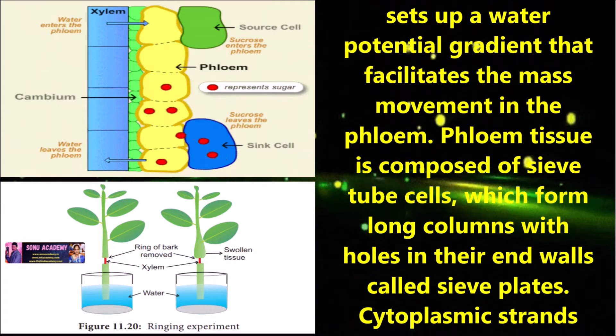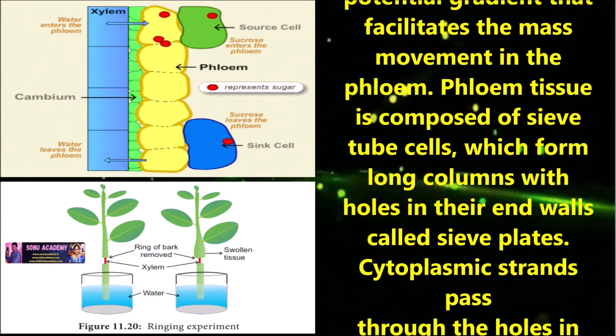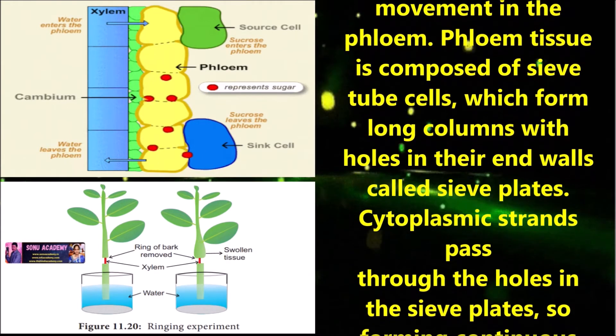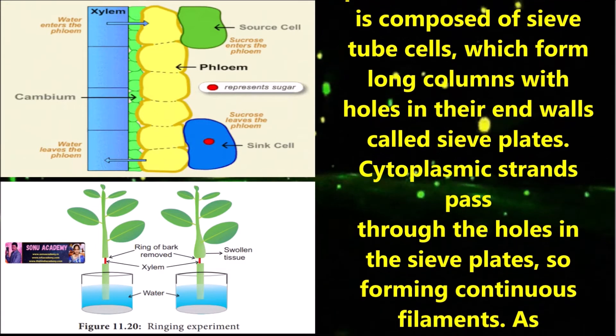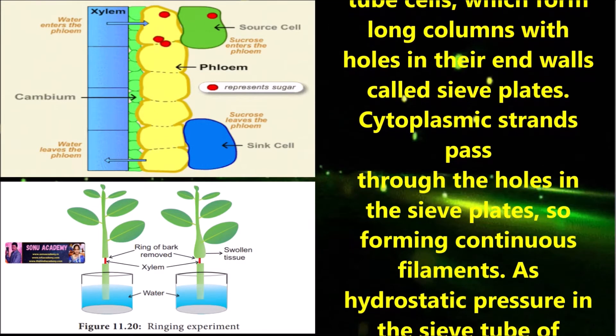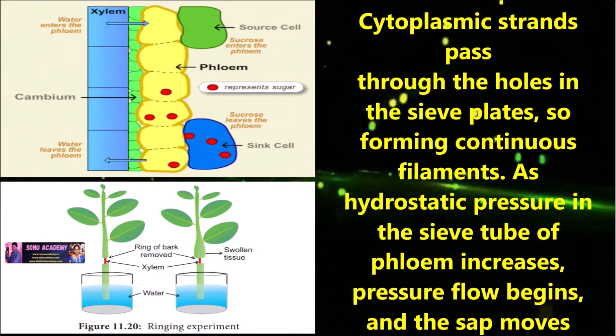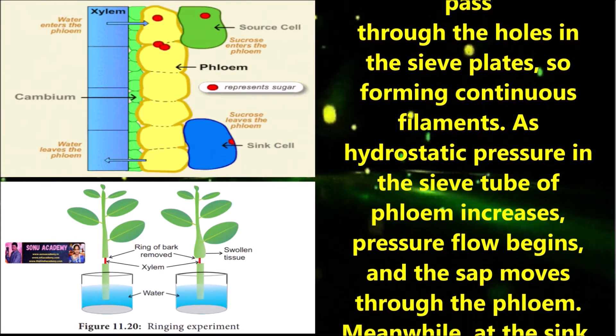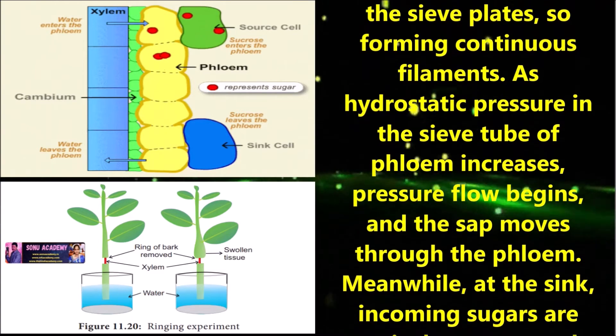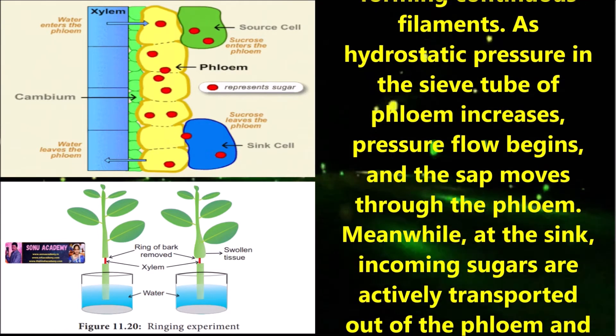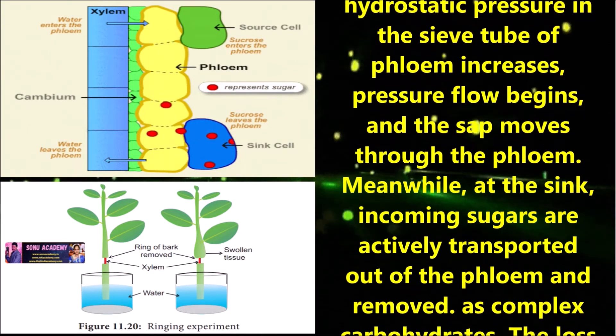Phloem tissue is composed of sieve tube cells which form long columns with holes in their end walls called sieve plates. Cytoplasmic strands pass through the holes in the sieve plates, forming continuous filaments.